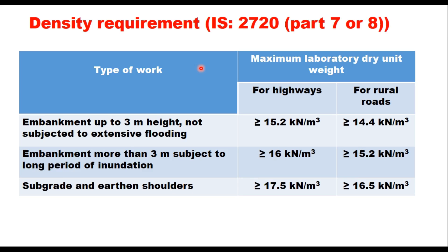Normally, only the material satisfying density requirements as given here shall be used in embankment or in subgrade. When constructing an embankment up to 3 meter height not subjected to extensive flooding, the minimum laboratory density should be as per this table — for highways it should be more than 15.2 kN per meter cube and for rural roads it can be 14.4 kN per meter cube or higher. For embankment more than 3 meter in height subject to long period of inundation or flooding, the density for highway should be more than or equal to 16 kN per meter cube and for rural roads more than 15.2 kN per meter cube. For subgrade and shoulders, separate density values apply.